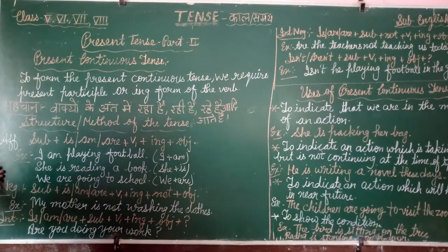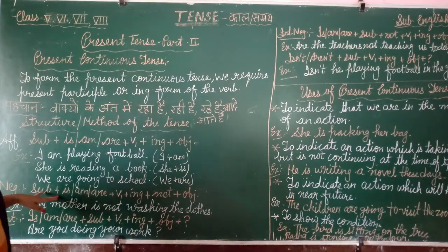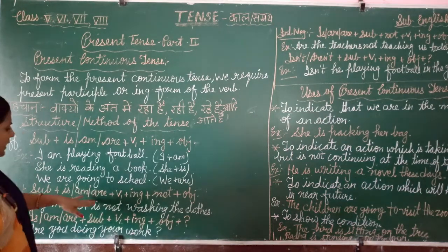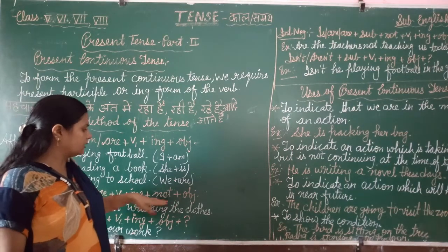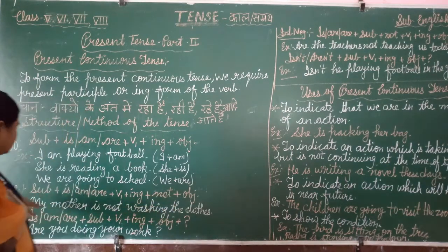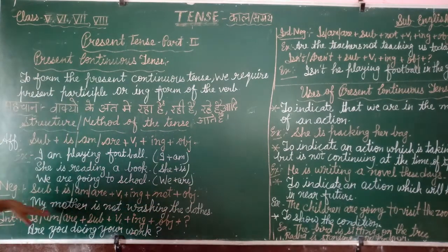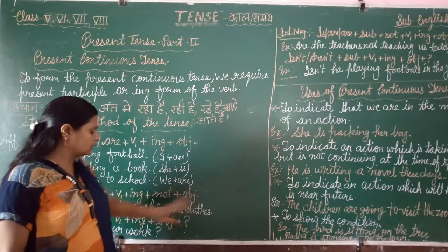Now we try to teach you about negative sentences. The rule of the negative sentence is: subject plus is/am/are plus not plus V1 plus ING plus object. For example: my mother is not cooking.